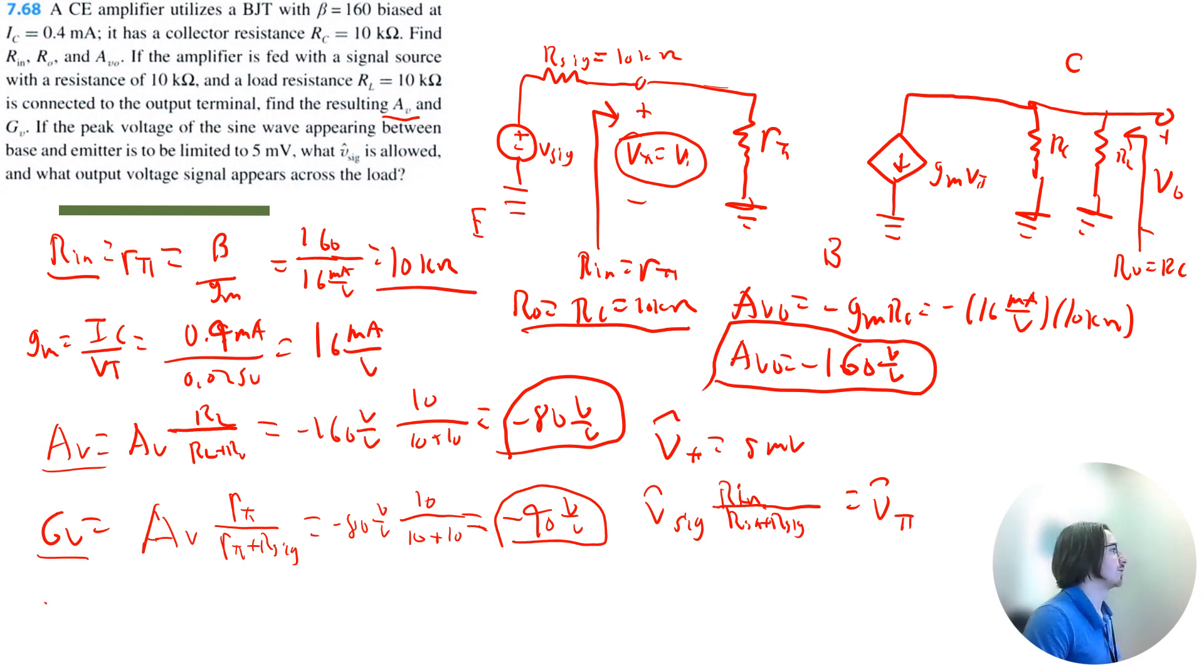So we can isolate v signal to be equal to vπ, and then we're just flipping this fraction. So it's Rin plus Rsignal divided by Rin. So that's equal to 5 millivolts multiplied by 10 plus 10 divided by 10. So we're just doubling it to 10 millivolts.